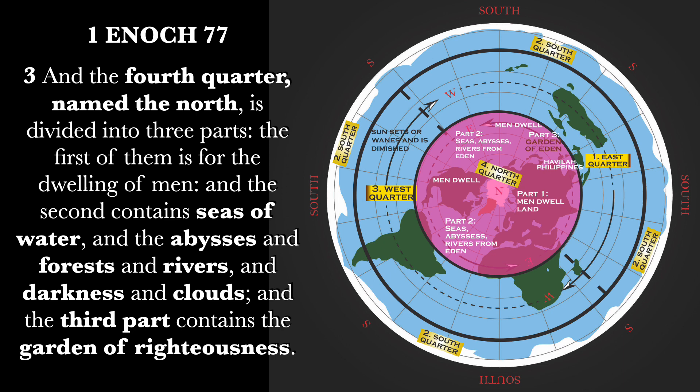Verse 3: 'And the fourth quarter, named the north, is divided into three parts.' The north is the middle or center or navel of the earth. In Enoch's perspective, as well as Jubilees and the whole of scripture, the first of them is for the dwelling of men. We know that most men live on the continents — the population in the north, as far as Asia, Europe, even northern Africa, the Middle East, North America, etc. So no doubt there is certainly something to that — that's where men dwell, on land, basically.